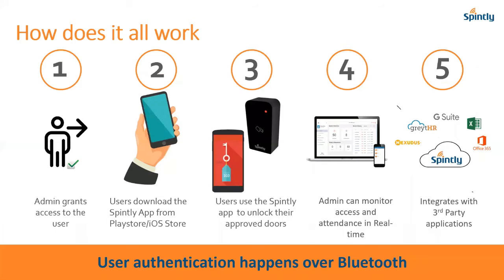Once a customer takes up a Sprintly access control and attendance management solution, the admin can grant access to all users in one shot through their smartphone. Users get an email and notification to download the app, log in, and they get access to the doors they've been given. These doors can be anywhere across the globe — if you move offices or floors you'll have access. The onboarding process is very seamless; you don't have to call employees to collect cards.